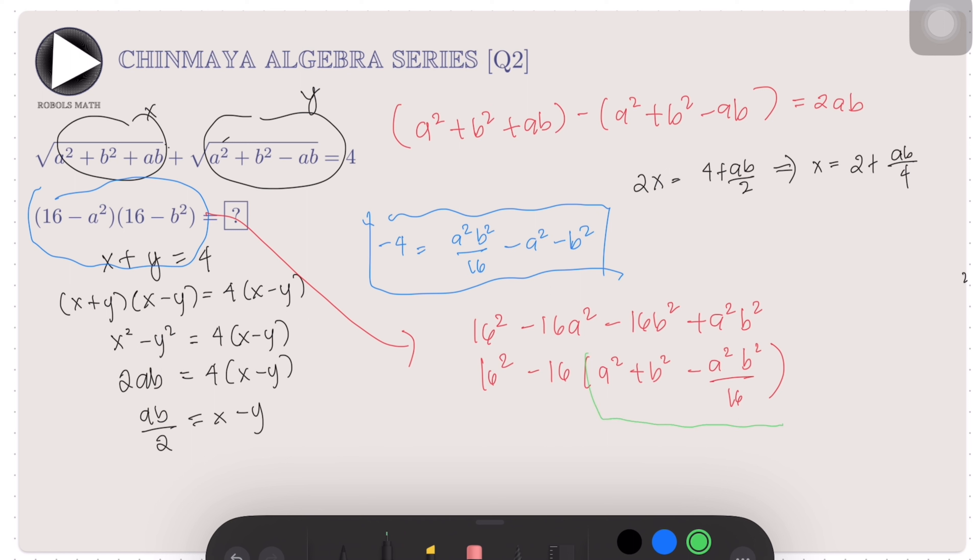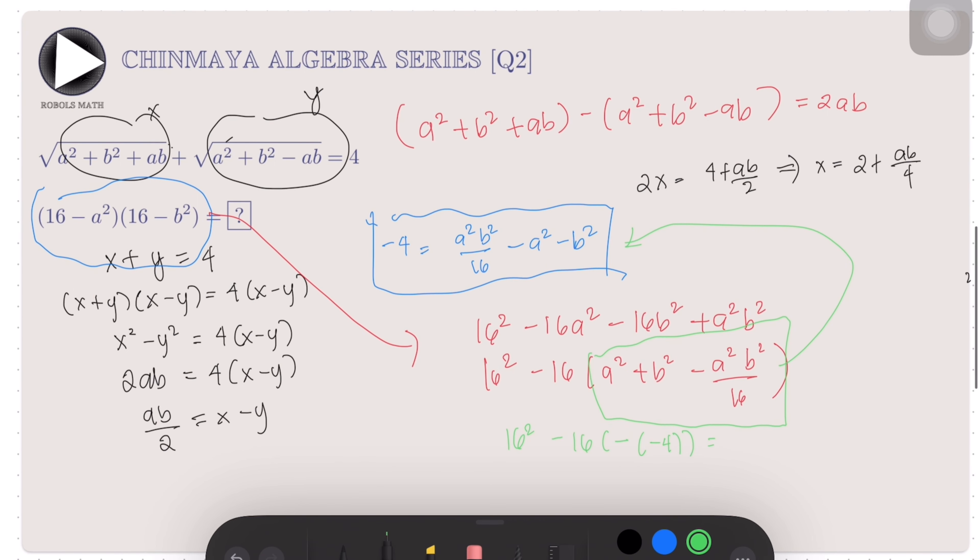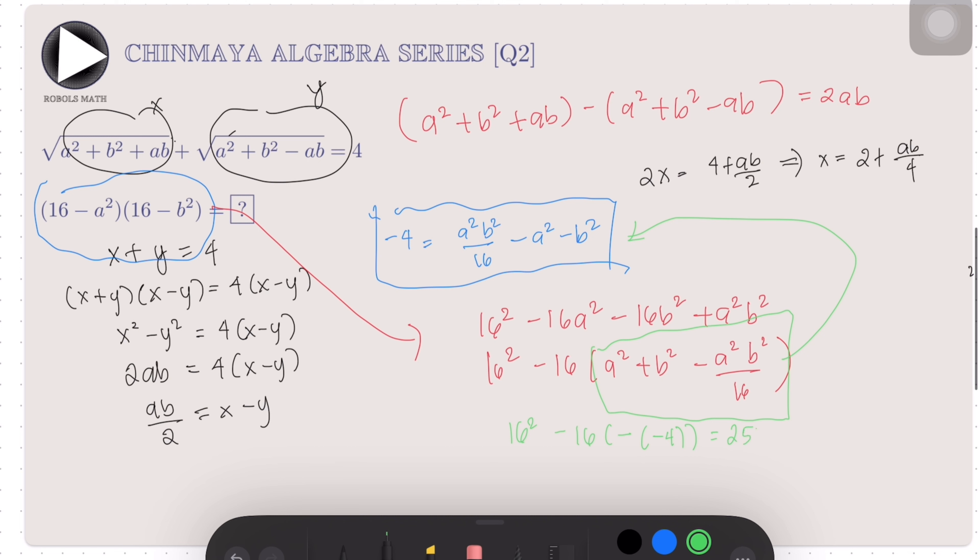Now, this group of terms here is equal to the negative of what we previously got. So, we get here 16² - 16 times the negative of -4, which, when we simplify, is equal to 256 - 64 = 192. Therefore, the answer here is 192, and that's our final answer.